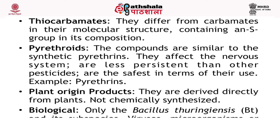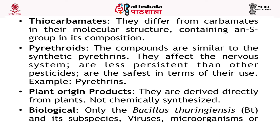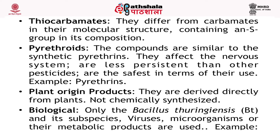Biological pesticides: only Bacillus thuringiensis and its subspecies, viruses, microorganisms or their metabolic products are used. They are applied against forest pests and crops, particularly against butterflies and caterpillars. Examples: Dipel, Foray, Thuricide.